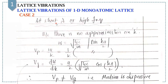Now let's take the second case, where we have short wavelength or high frequency. Because there is no approximation on K in this case, we simply have omega equals sqrt(4C/M)·sin(Ka/2). By the definition of phase velocity, that equals omega over K equals (1/K) times this term. And the group velocity is dω/dK, giving a different term. In case 2, we get different results for phase velocity and group velocity, so the medium is dispersive.